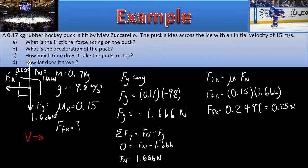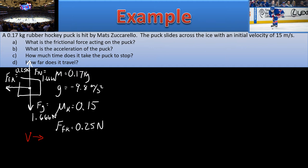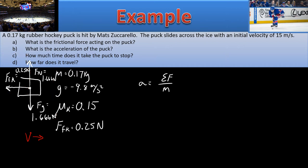Assuming we're going to travel pretty far because we have a high initial velocity. To find the acceleration of the puck, we use Newton's second law: A equals net force divided by mass. In the y direction, the two forces cancel. In the x direction, there's only the frictional force of 0.25 newtons. So acceleration equals 0.25 divided by the mass, giving an acceleration of 1.47 meters per second squared.